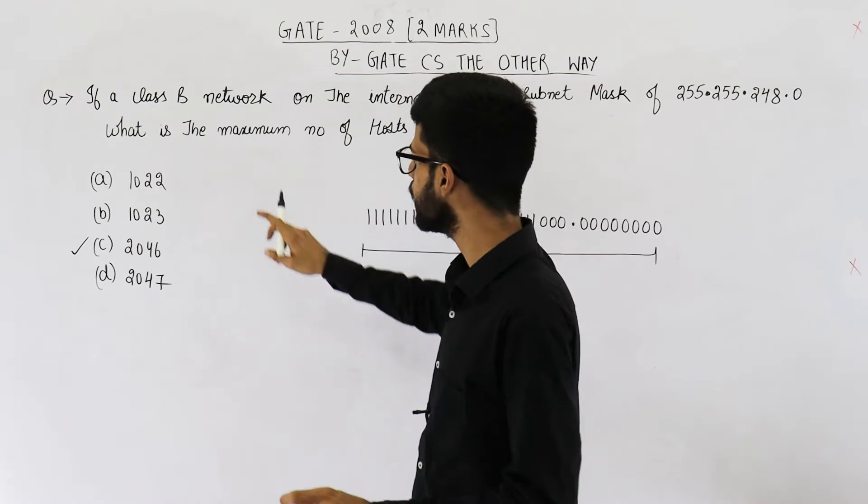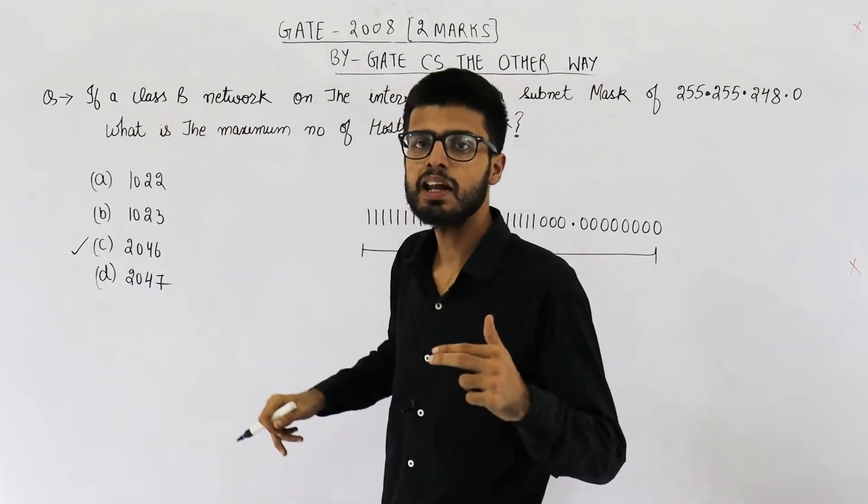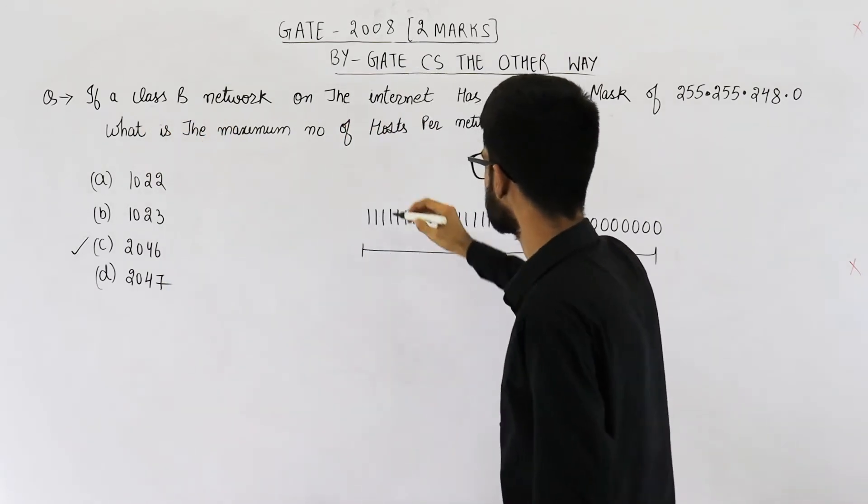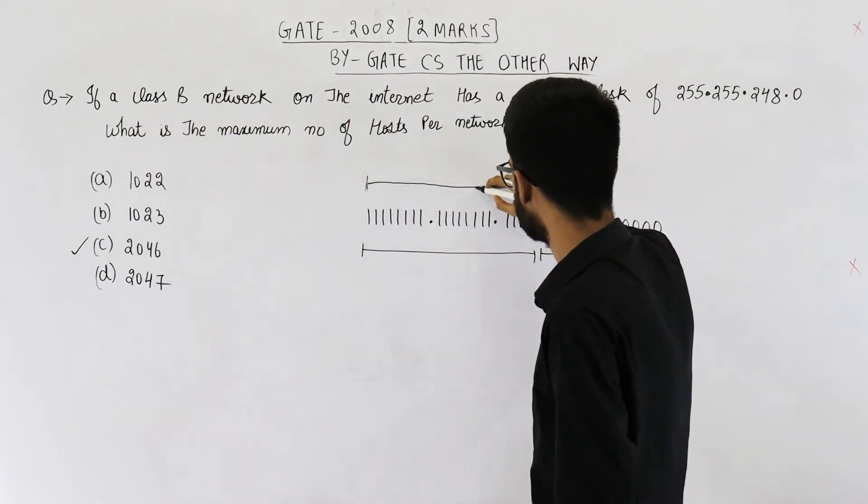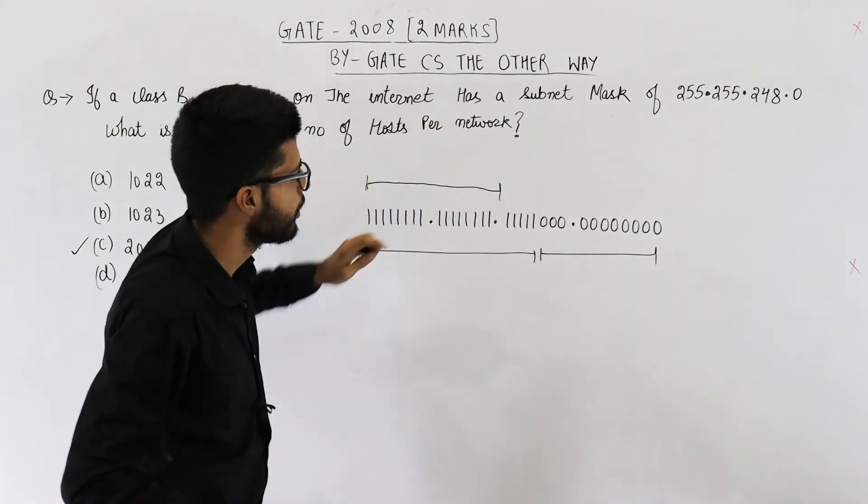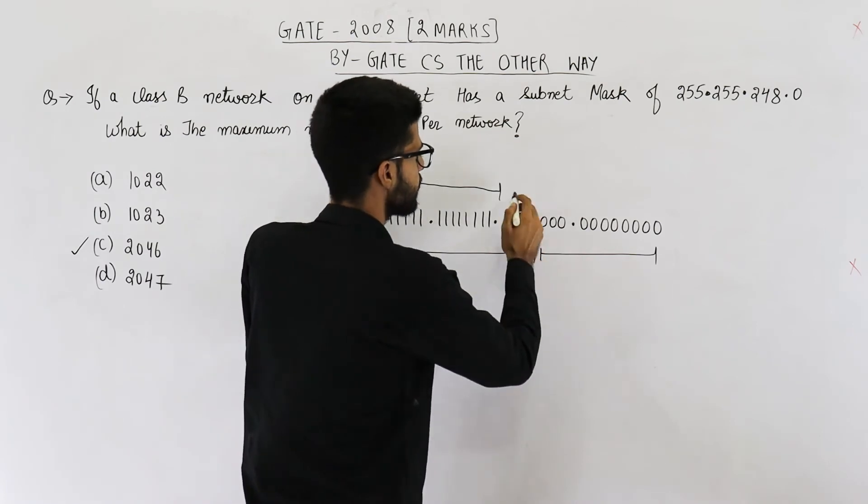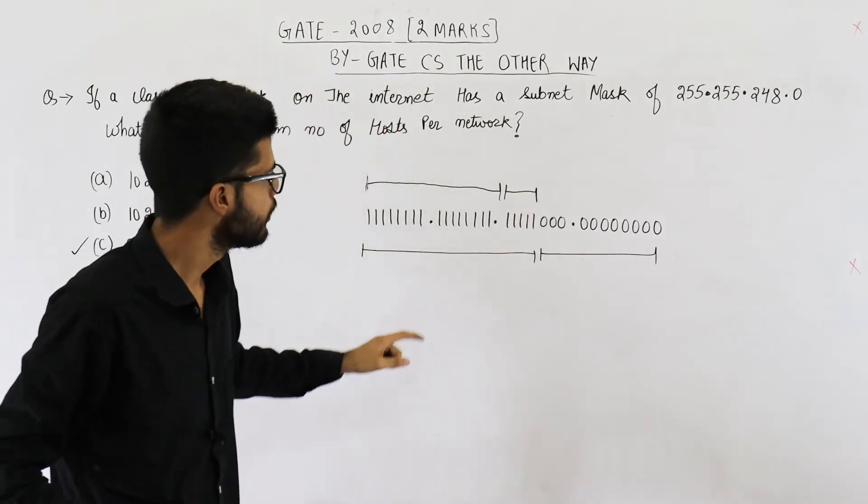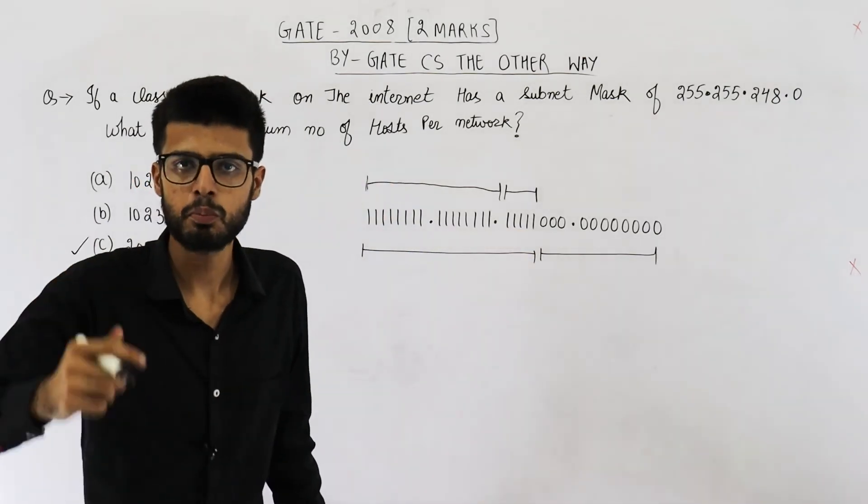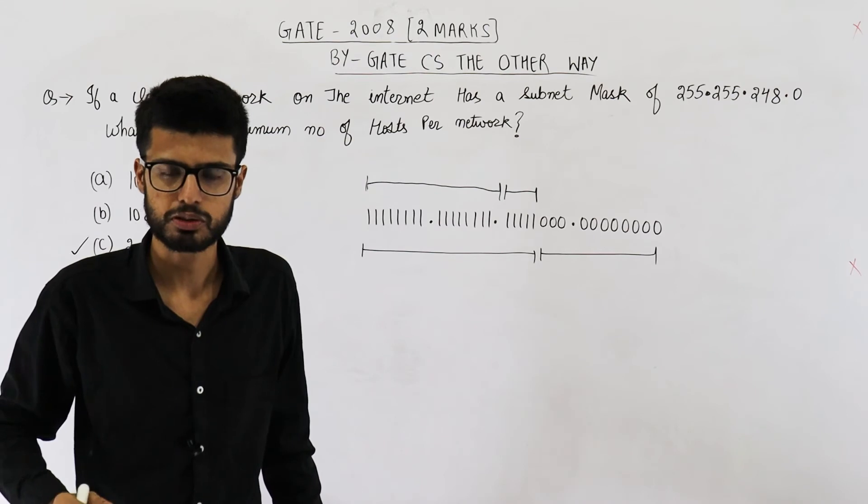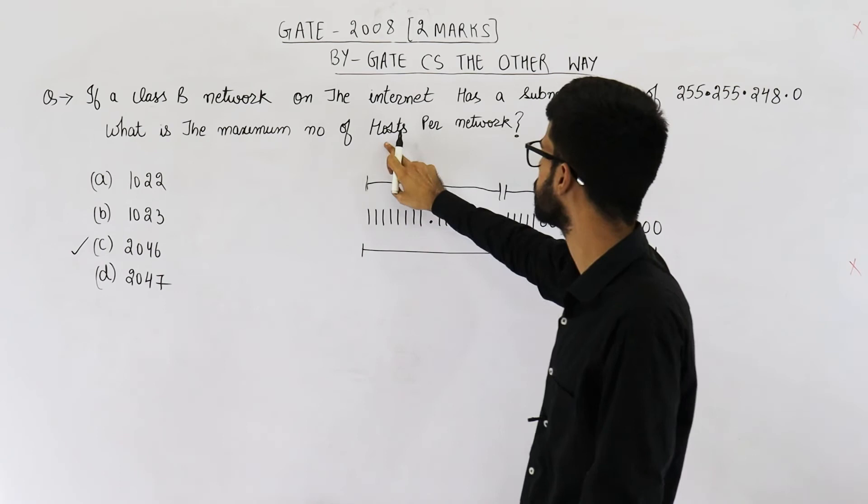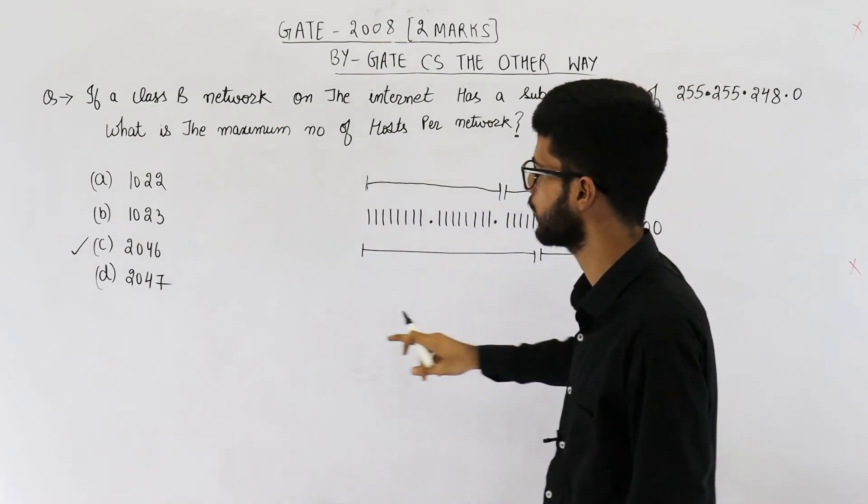Anyways, if we consider this thing, then we can also calculate how many subnets are possible because it is a class B network. This means the network ID is of 2 octets or 16 bits. So this part is the network ID, but subnet mask is still here. That means all of these bits are for subnet ID. So you have 1, 2, 3, 4, 5. You have 5 subnet ID bits. Hence maximum 2 raised to the power 5 subnets are possible. Anyways, they are not asking about number of subnets. They were only asking about the number of hosts in one network that is 2046.